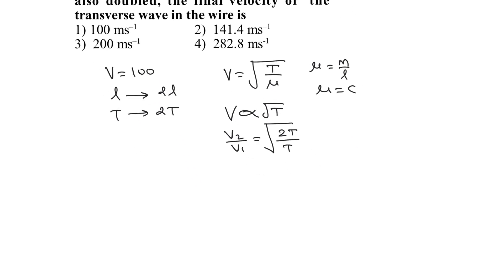So V₂ divided by the initial velocity of 100 equals the square root of 2, which is 1.414. Therefore, V₂ equals 141.4 meters per second.